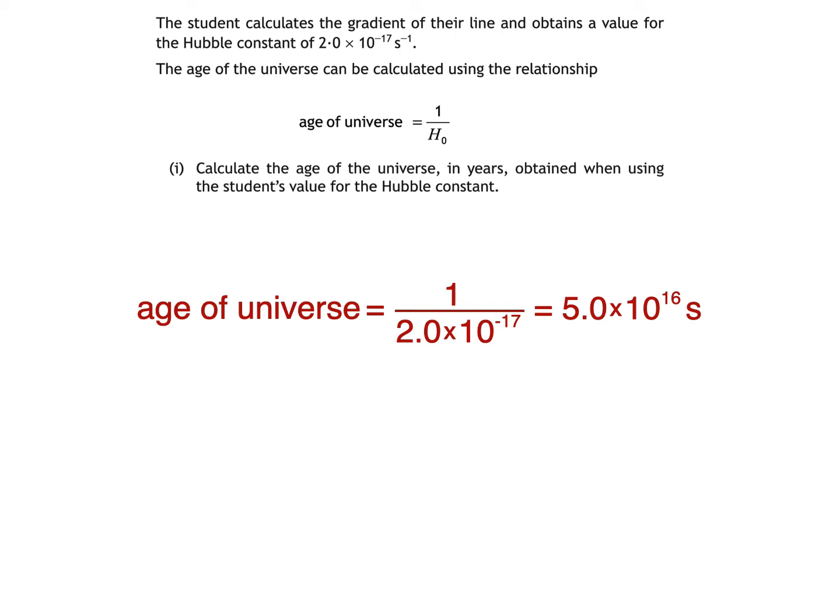To convert that into years, just divide 5.0 times 10 to the power of 16 by the number of seconds in a year. That's 365 days in a year with 24 hours in each day, 60 minutes in an hour and 60 seconds in a minute. Of course, since every fourth year is a leap year, which gives us an extra day in February, you can also use the number 365.25 as the number of days in a year.